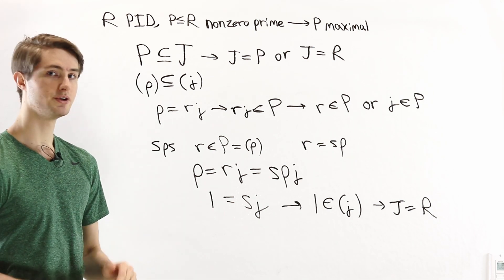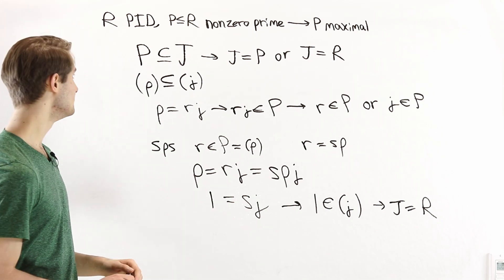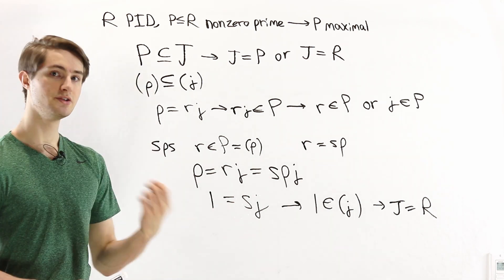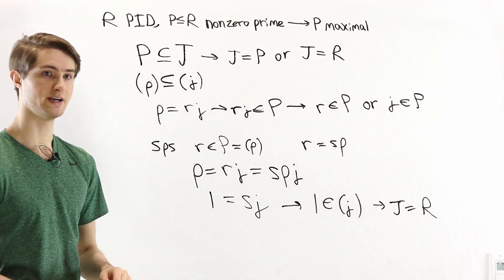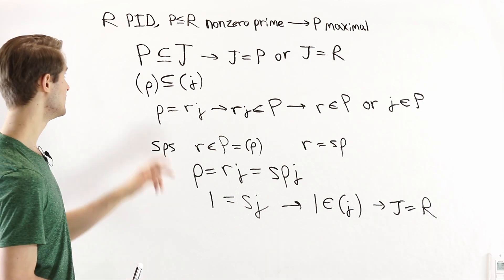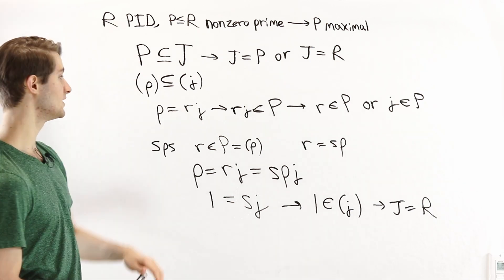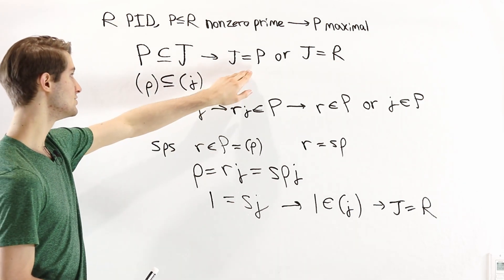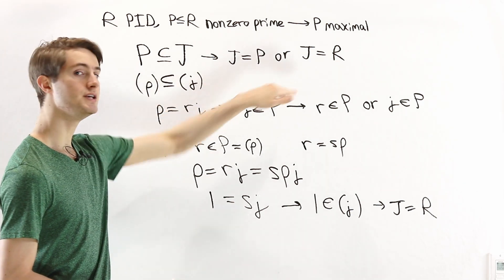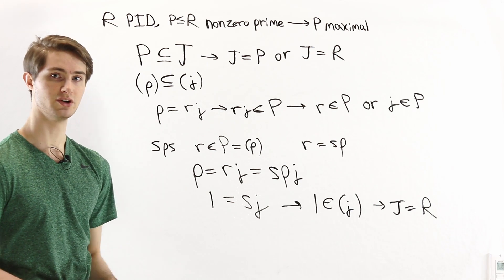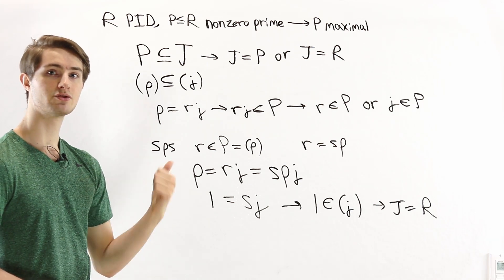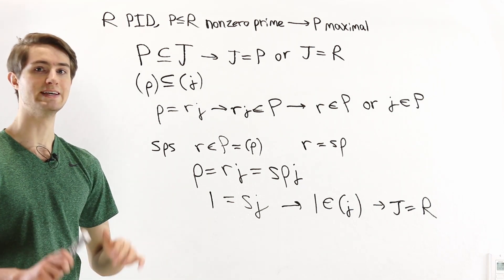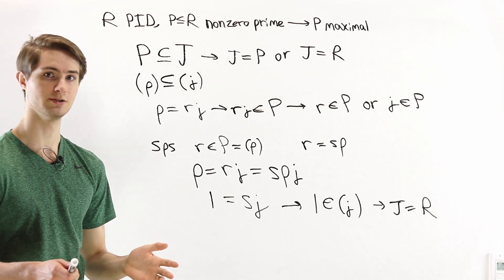So we've shown that in a principal ideal domain, if P is some non-zero prime ideal, then if P is a subset of another ideal J, either J equals P or J equals R, and therefore every non-zero prime ideal is maximal.